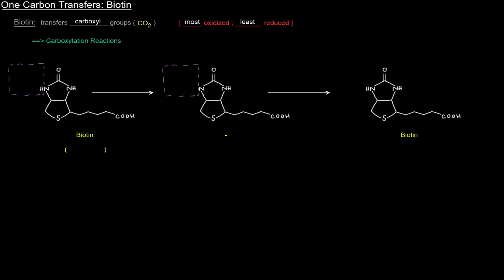So this here is the structure of biotin, and biotin is specifically vitamin B7. And during the course of the reaction, you'll notice this little purple dotted box here. That portion of the molecule is pretty much the most important part.